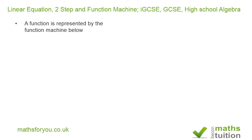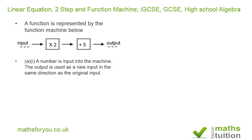A function is represented by the function machine below. A number is input into the machine. The output is used as a new input in the same direction as the original input. You go from left to right. It then says the second output is 11. What was the first input?